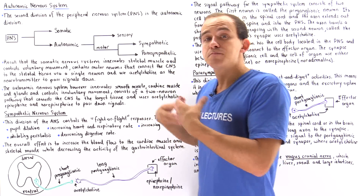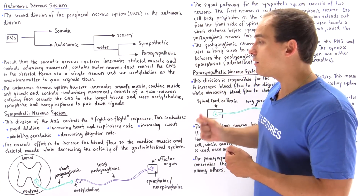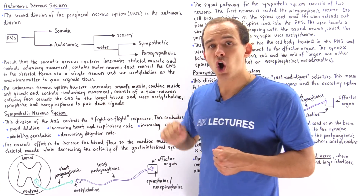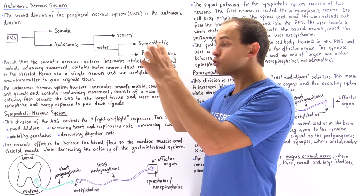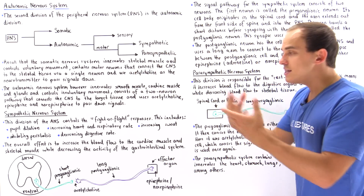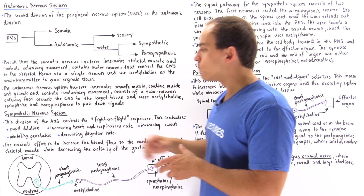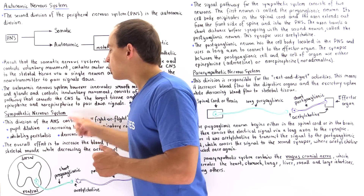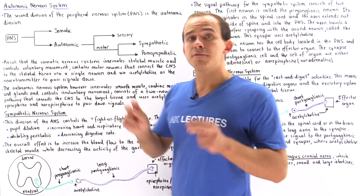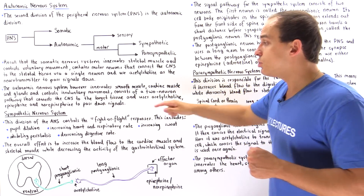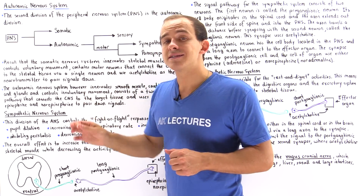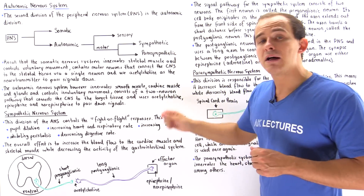The rate of our respiration increases as well as the rate of our heart. As we begin to run, we have to see where we're going, so our pupils dilate so that more light gets into our eye and we can better see where we're running. Our sympathetic nervous system is the division responsible for the fight or flight response — this includes dilating our pupils, increasing heart rate and breathing rate, and increasing the amount that we sweat.